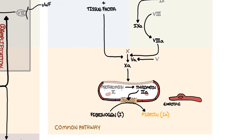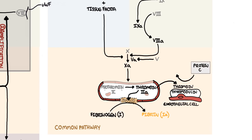The first antithrombotic pathway is protein C and protein S. As clot formation progresses, thrombin — factor 2a — binds to thrombomodulin, an integral membrane protein on the endothelial cell surface. The thrombin-thrombomodulin complex activates protein C, which together with protein S as a cofactor inhibits factor 5a and factor 8a activity, thereby halting coagulation.